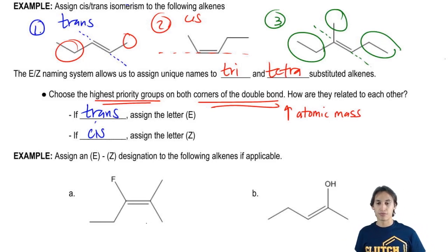So first of all, let's look at F. When I say that I have to do the highest priority groups on both corners, what is a corner? I'm just talking about this being one corner and this being another.